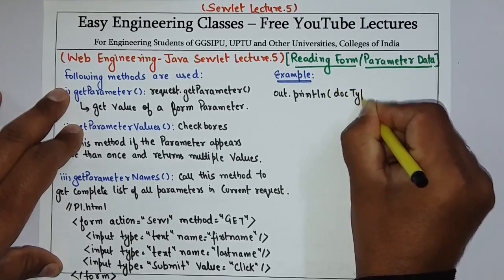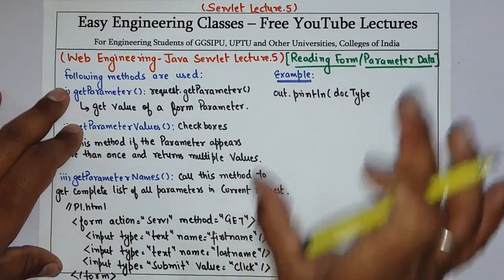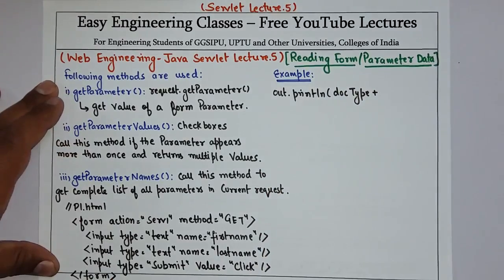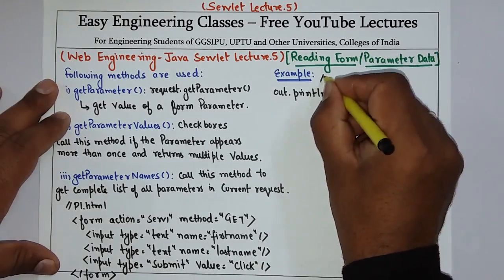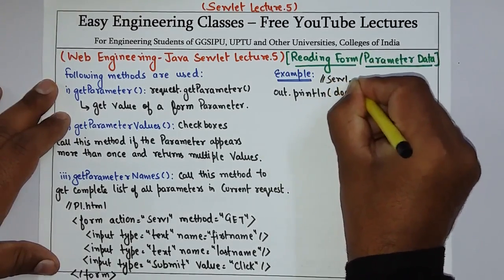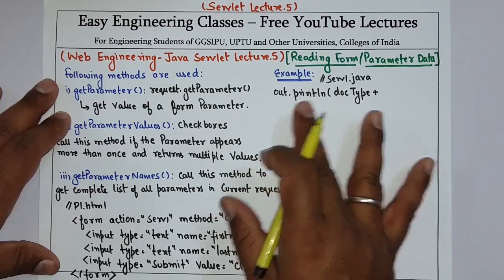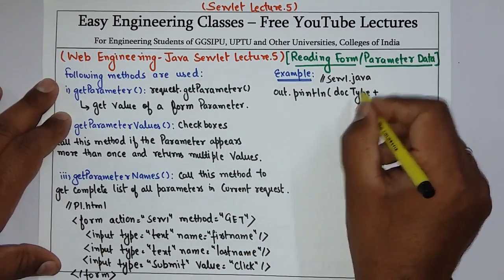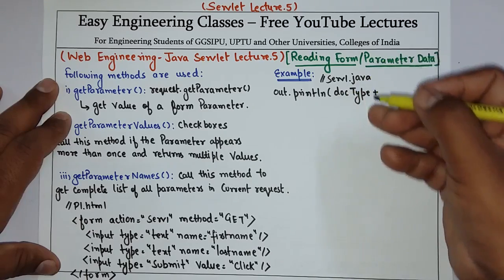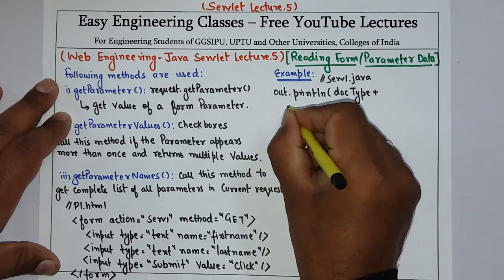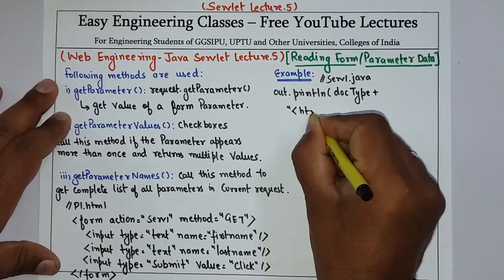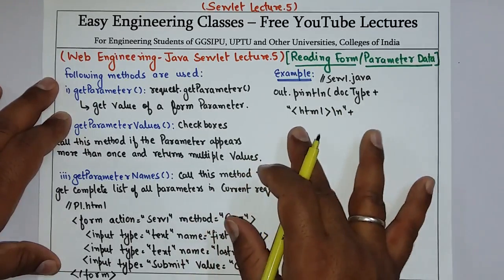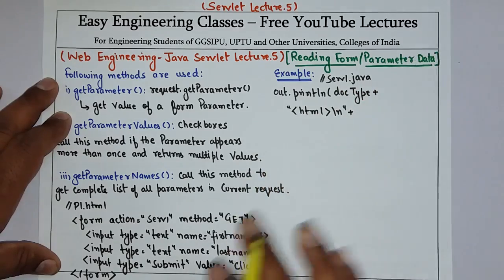To display the output you need to create entire HTML inside the servlet, which is done with various concatenations of HTML tags and Java code. I have written out.println for DOCTYPE, and then you can define DOCTYPE in the earliest stages of the program.